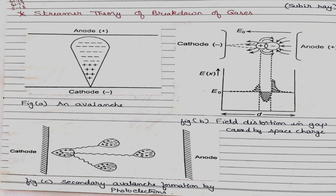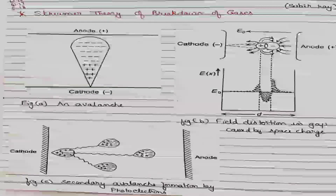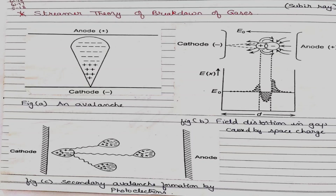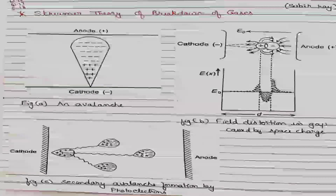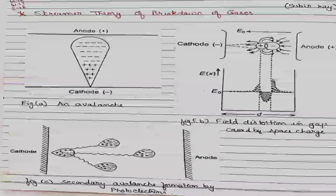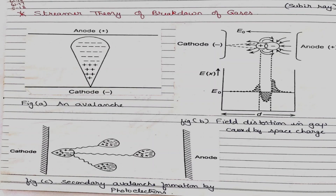In terms of Townsend's theory, the first figure shows the anode (positive) and cathode (negative) with an avalanche. The second figure shows field distortion in the gap caused by space charge, and the third figure shows secondary avalanche formation by photoelectrons. These are the different stages in Townsend's theory of breakdown of gases.